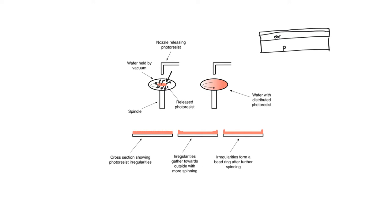That layer of photoresist has to be of even thickness, because the thickness will determine how long it takes for it to change its chemical nature during exposure, and it will also determine how long we need to bathe it in the development liquid before it is stripped away. So achieving uniform distribution across the whole area of the wafer is important.